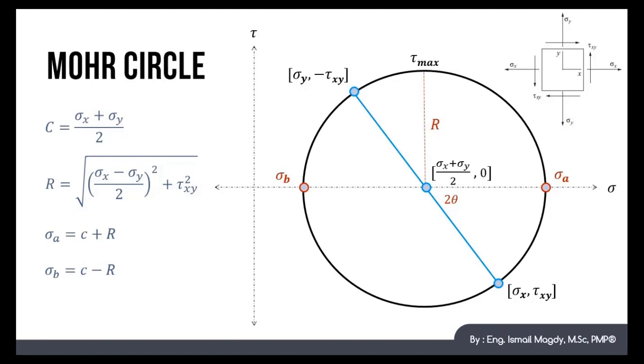Hence, the angle of rotation, which is 2 theta, could also be calculated using the geometry of this shape. If we create this imaginary triangle, we will find that this angle equals 2 theta. And the tangent of this angle will equal the opposite over the adjacent. Hence, tan 2 theta will equal 2 tau xy over (sigma x minus sigma y).